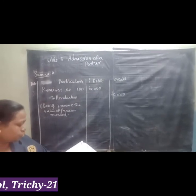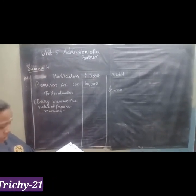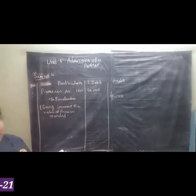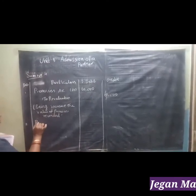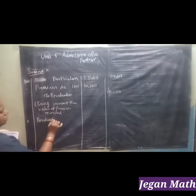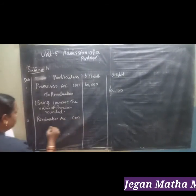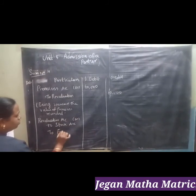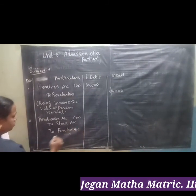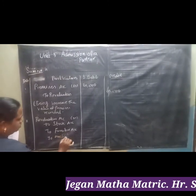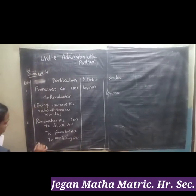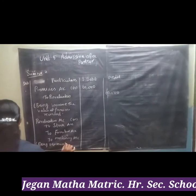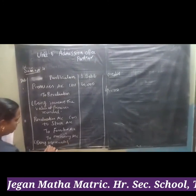Second adjustment: depreciate stock by 5,000, furniture by 2,000, and machinery by 2,500. Depreciation means loss. So the entry will be: Revaluation Account Dr to Stock Account, to Furniture Account, to Machinery Account. Being depreciation — depreciated amount recorded.